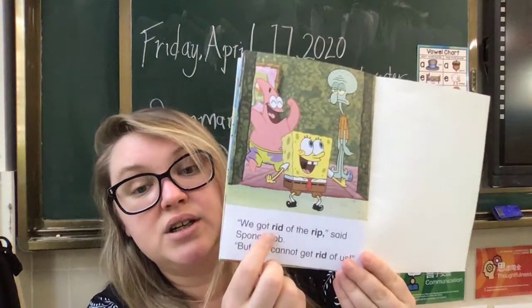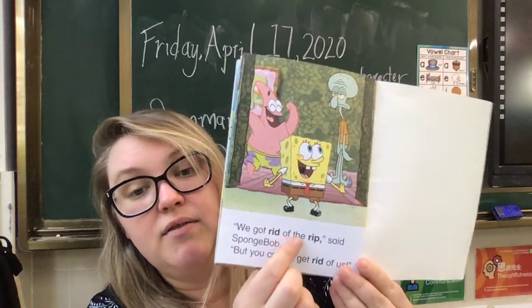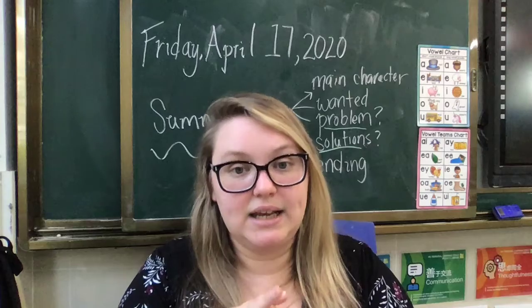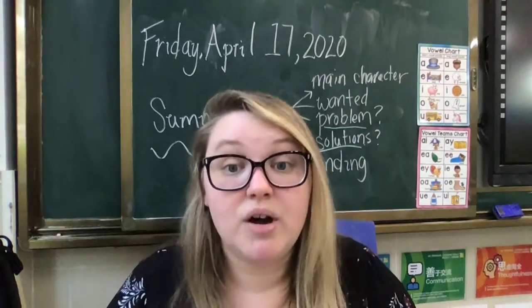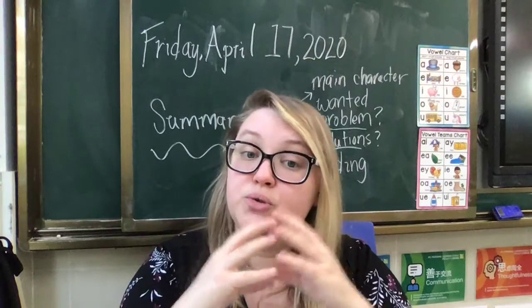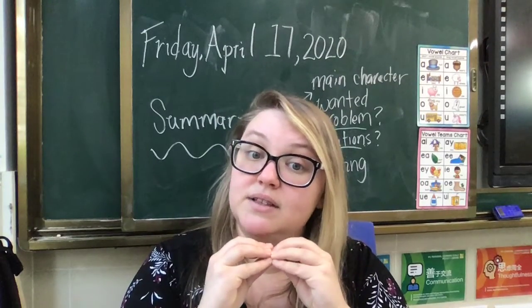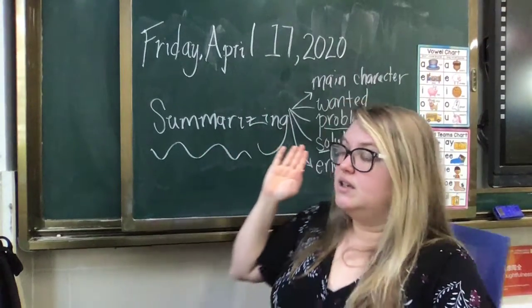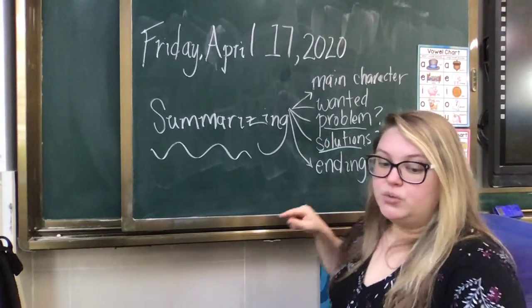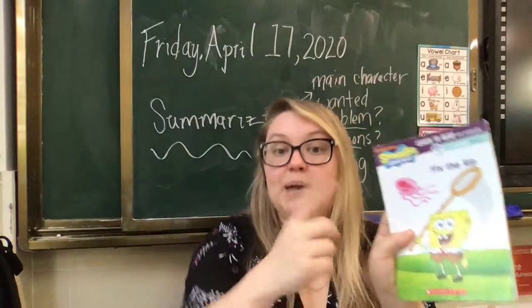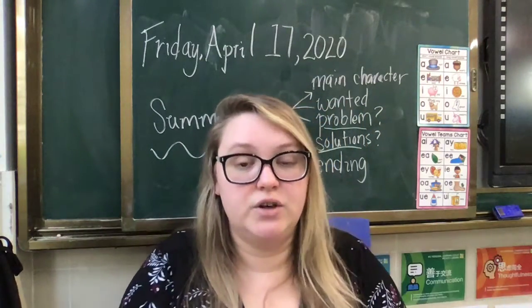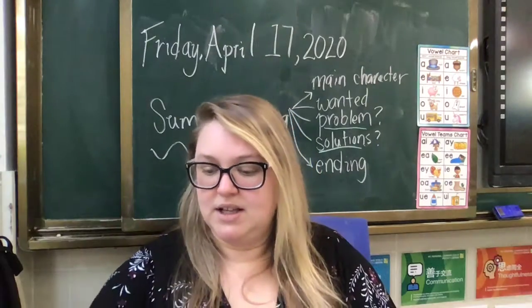Spongebob and Patrick got rid of the rip. Many times the ending — it says it right in the book. We just have to use the sentence. And instead of writing 'we fixed the rip' as the ending, you write 'Spongebob and Patrick fixed the rip.' You say who it is — you don't say 'we.'